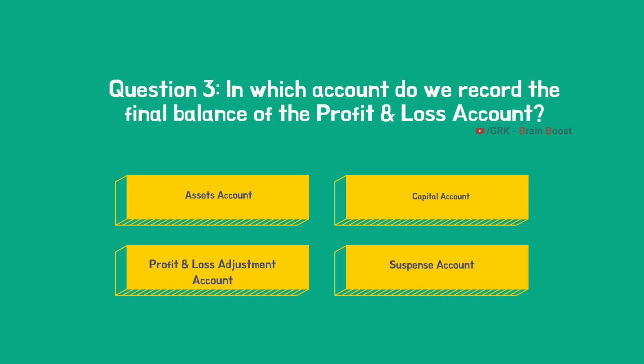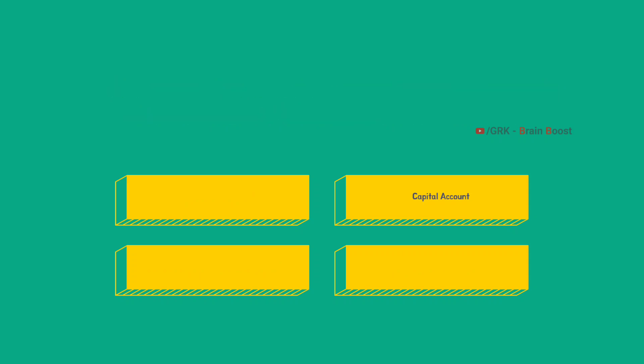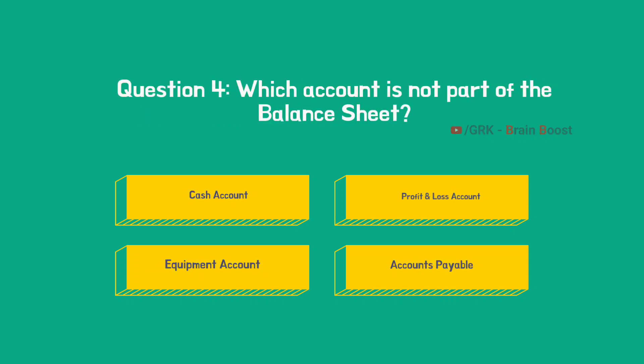Third question: in which account do we record the final balance of the profit and loss account? As we discussed, the debit balance or credit balance in the P&L — meaning the loss or profit — will be transferred to the capital account. So the correct option is the capital account.